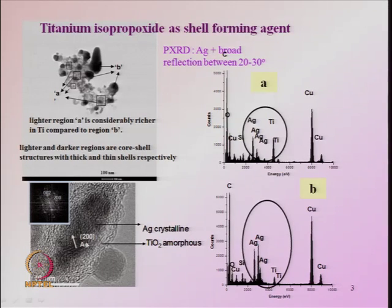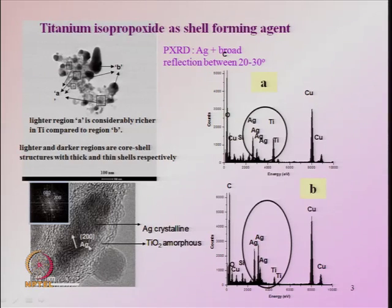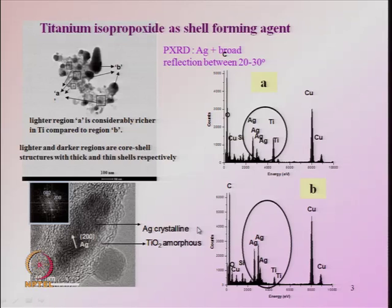From the lattice fringes you can estimate the fringe width and identify the corresponding lattice planes of the silver particles. This distance corresponds to the (200) reflection plane of silver. Electron diffraction from these particles further confirms reflections corresponding to silver, characterizing the silver-titania core-shell structure.